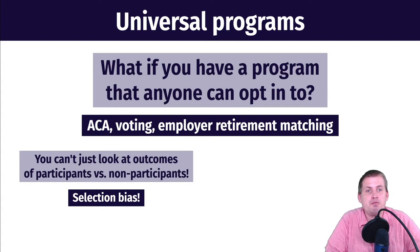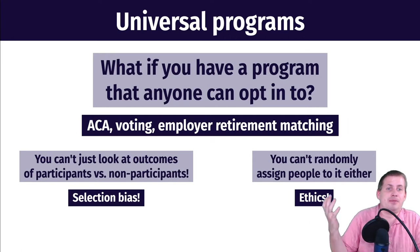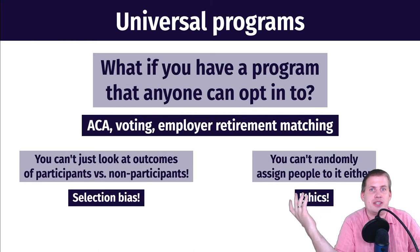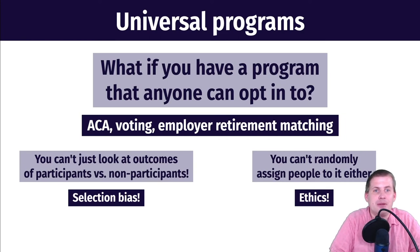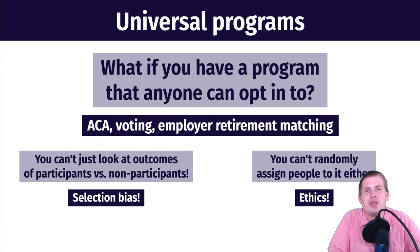What if you could randomize and say we'll randomly assign you to register to vote, and if you're not assigned you can't register — that's unethical. In these situations, you can't randomly assign people to not sign up for the ACA exchanges or their 401k, because that's just bad. So you can't really do a randomized controlled trial here.